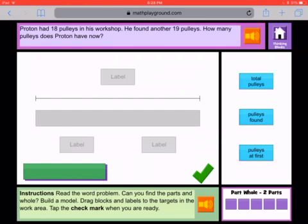Read the word problem. Can you find the parts and whole? Build a model. Drag blocks and labels to the targets in the work area. Tap the check mark when you are ready. Thank you robot reader, definitely sounds like a robot.